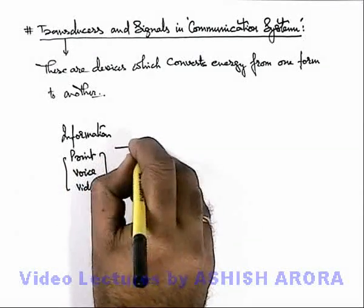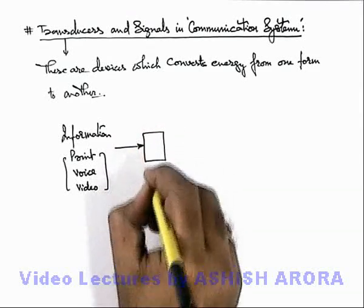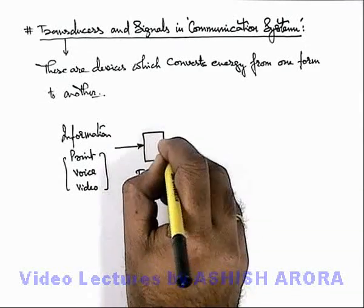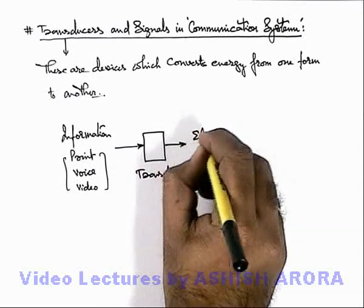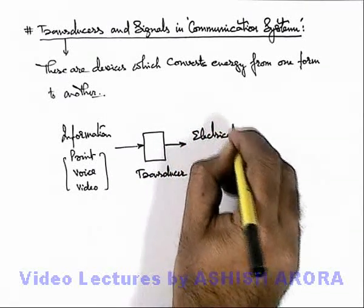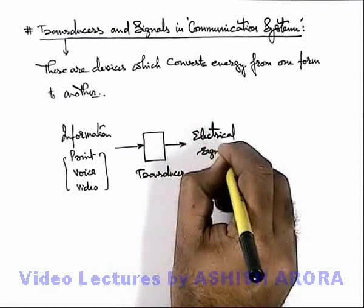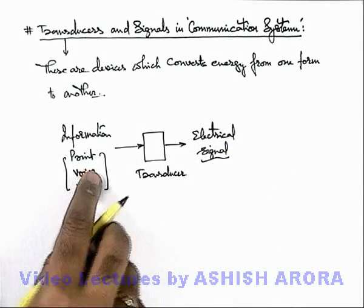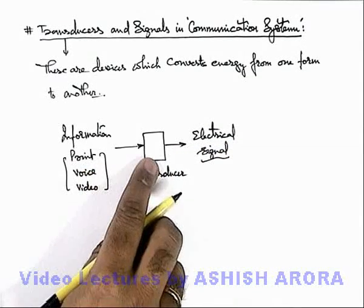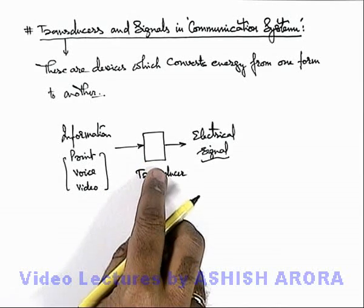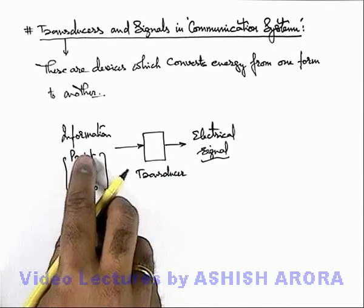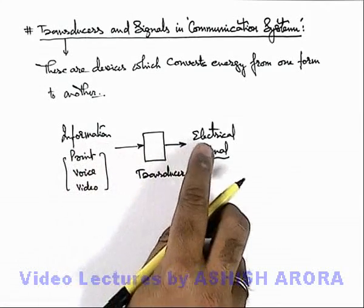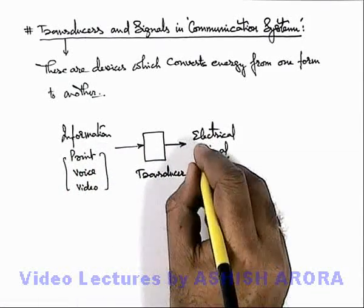The information is first fed to a device we call a transducer. This transducer gives an output which is an electrical signal — the electrical form of the information fed to it. The transducer converts print, voice, or video into the electrical form, which we term as a signal.